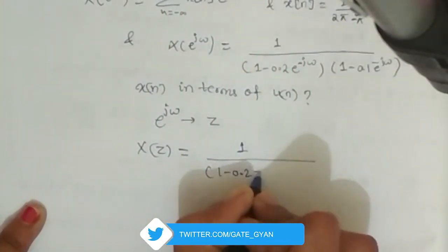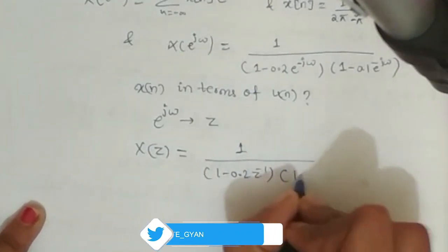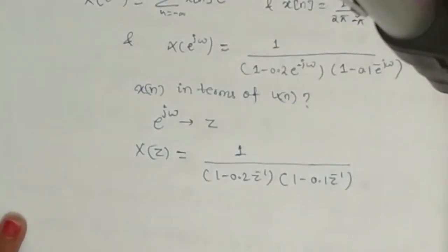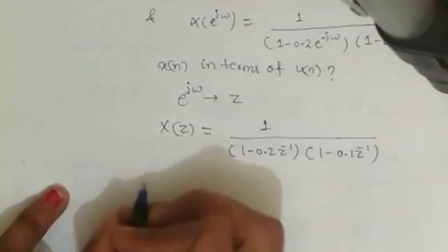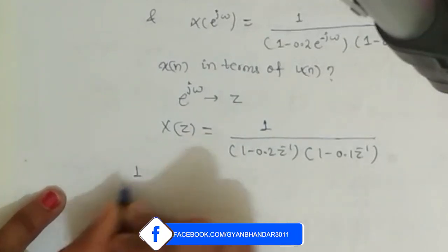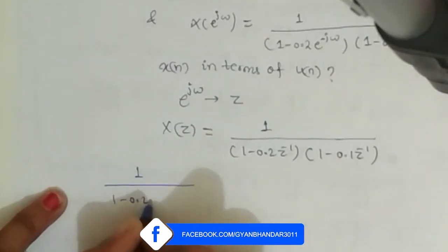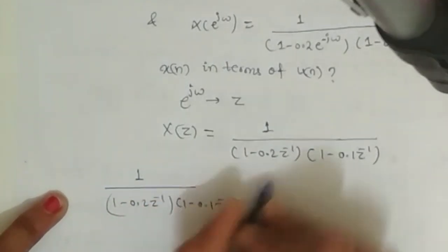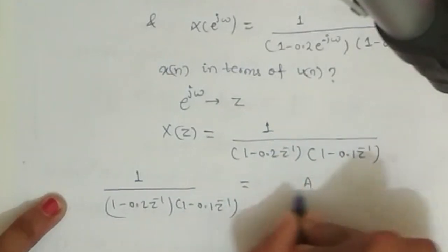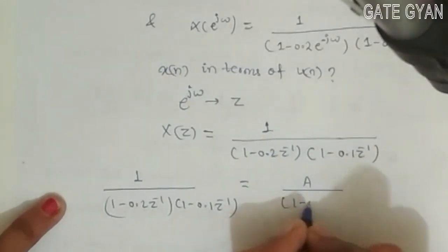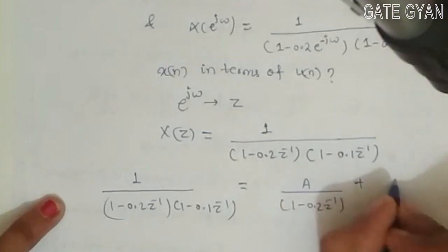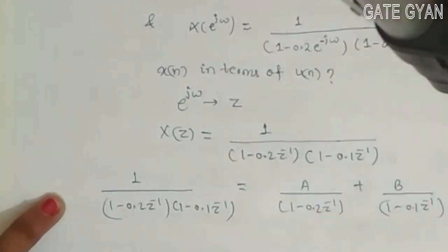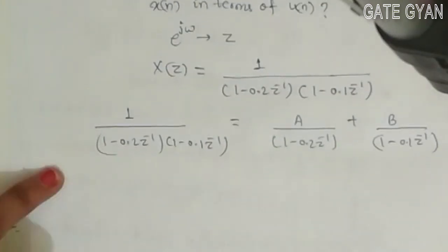1 upon (1 - 0.2z^-1)(1 - 0.1z^-1). Now I will solve it by using partial fraction. So I will rewrite it as A/(1 - 0.2z^-1) plus B/(1 - 0.1z^-1).